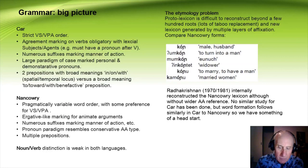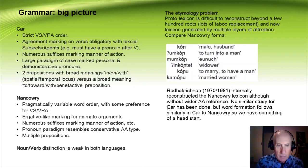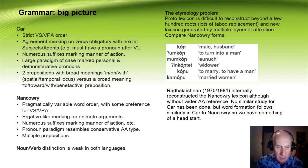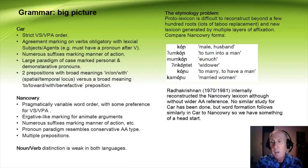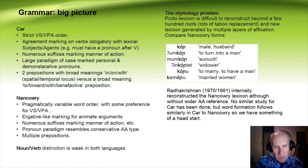Nankaori is similar but different. It has pragmatically variable word order, but there is a preference for verb-initial. There is no agreement marking on verbs, but there is a kind of ergative marking for animate arguments — something very different to Ka. There are numerous suffixes marking manner of action on verbs. Nankaori has more prepositions, although what exactly counts as a preposition is debatable.